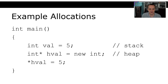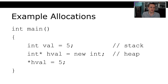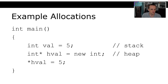Whenever we allocate memory with the `new` keyword, it goes on the heap. For example, if I have a pointer to an integer called `hval` (heap value) and say `equals new int`, that asks the operating system for memory on the heap. In C, you'd use `malloc`, but we won't go that low-level. This value lives on the heap, whereas `val` lives on the stack — that's how you allocate on the stack versus the heap.